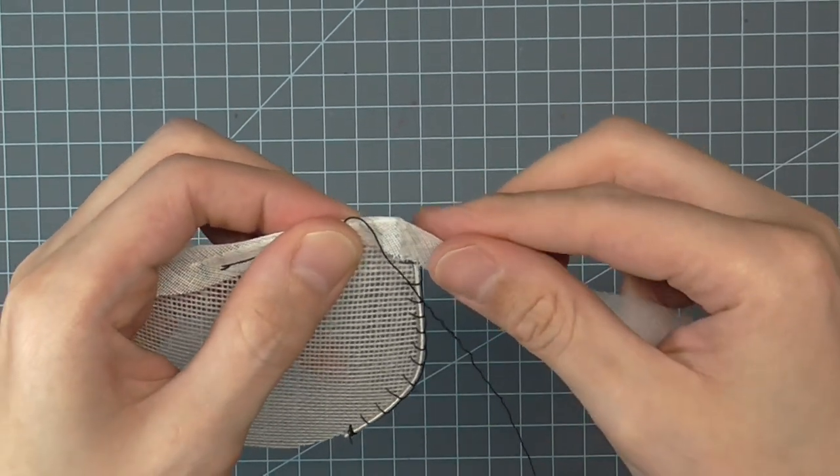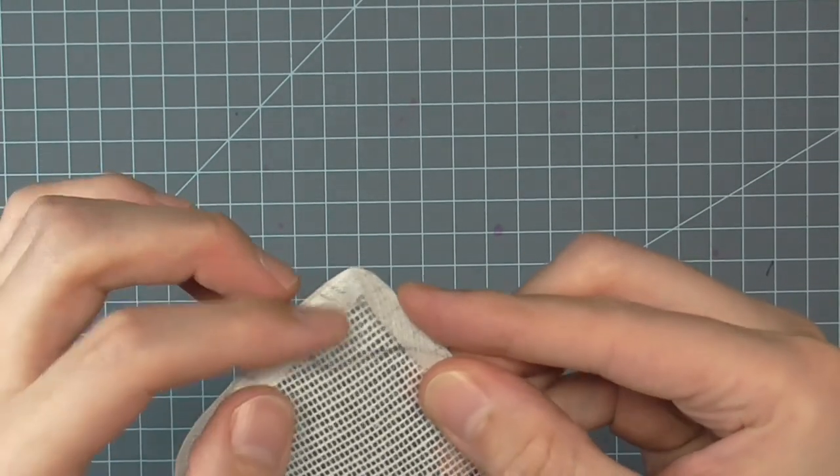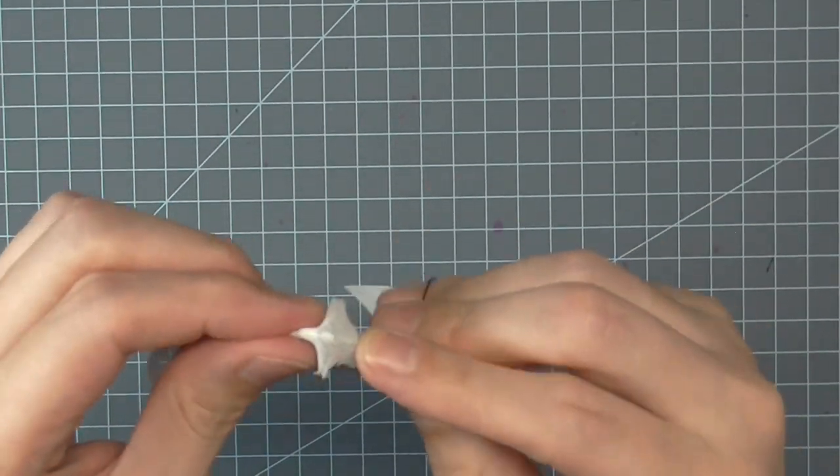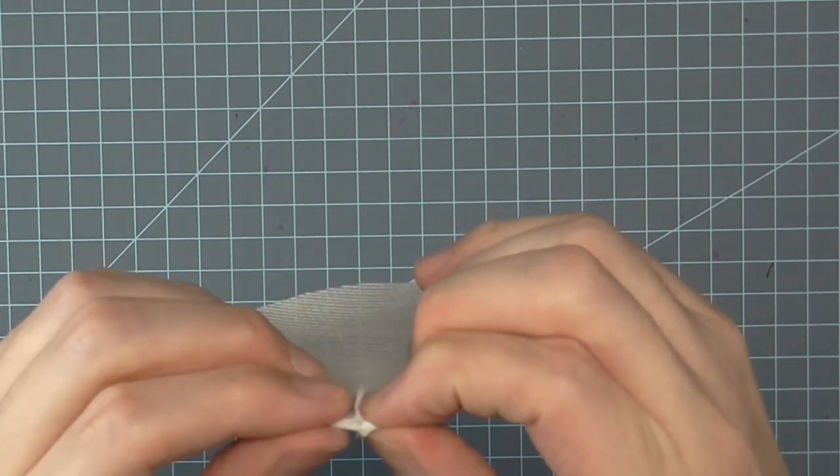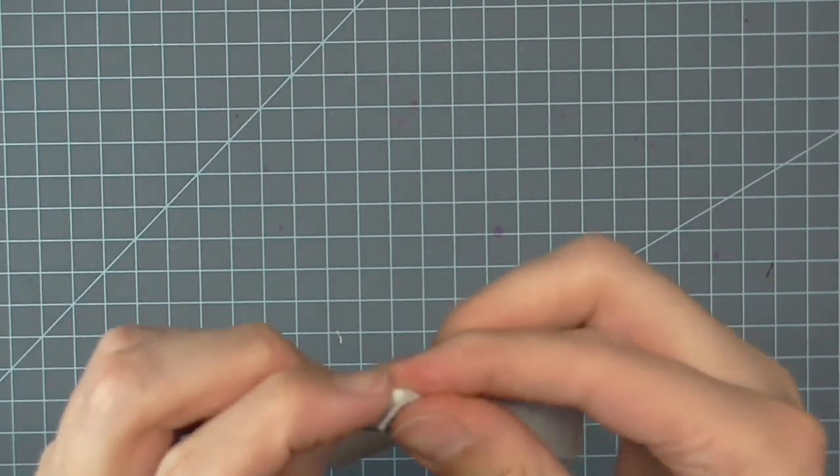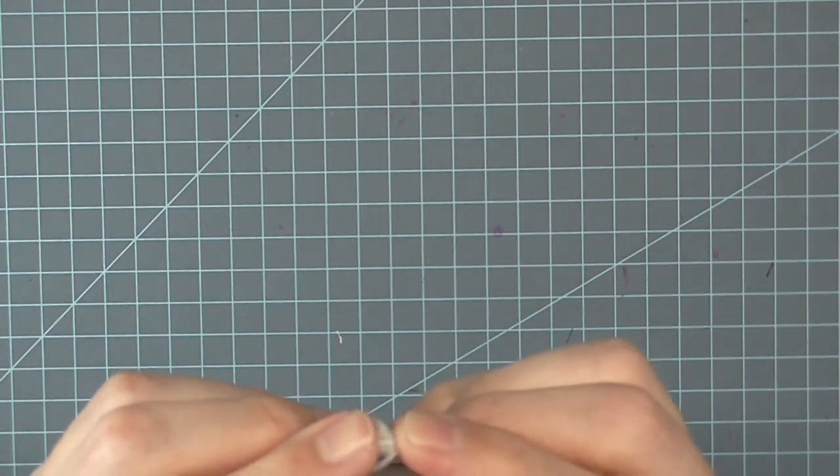For the crinoline tape, sew as normal until just before the point. Fold the tape over the point and form two little gussets on either side of the piece. Fold the gussets to one side and continue sewing around the piece through all layers, including the gussets.